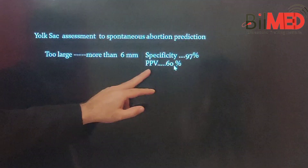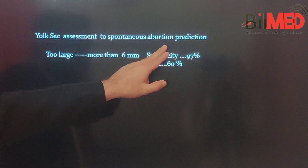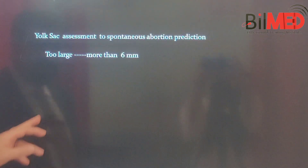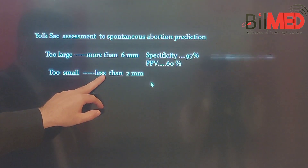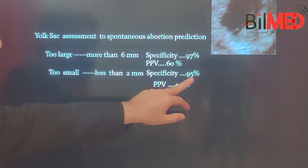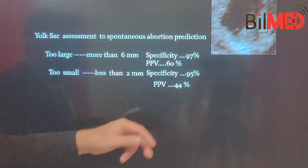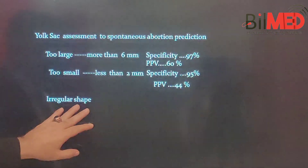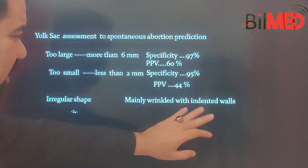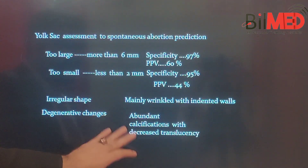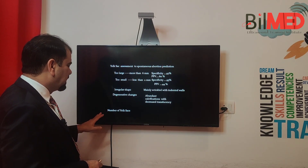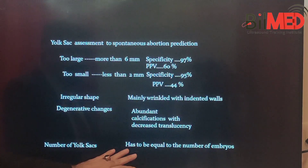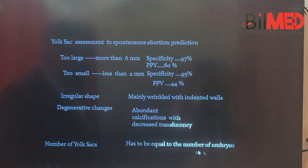If the yolk sac is too small — less than two millimeters — the specificity is 95% and the positive predictive value is 44% for spontaneous abortion. An irregular shape, mainly wrinkled with indented walls, degenerative changes, abundant calcifications, and decreased translucency are also signs of an abnormal yolk sac. The number of yolk sacs should be equal to the number of embryos.